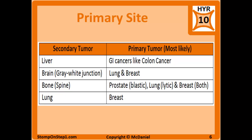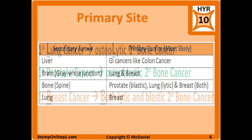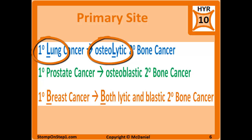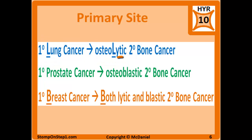Prostate cancer, lung cancer, and breast cancer tend to metastasize to the bone and the spine, and breast cancer tends to prefer the lungs. Different primary tumors have unique secondary bone cancer characteristics. Lytic lesions are where increased osteoclast activity eats away at the bone and releases calcium, seen as hypercalcemia. Blastic lesions are where increased osteoblastic activity results in more bone being laid down than normal.